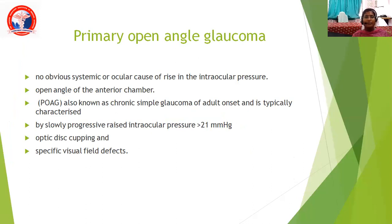Coming to primary open-angle glaucoma, what is primary? We don't have any specific causes. There is no obvious systemic or ocular cause of rise in the intraocular pressure. That is why we call it primary. There is an open angle of the anterior chamber. It is also known as chronic simple glaucoma of adult onset, characterized by slowly progressive raised intraocular pressure of more than 21 millimeters of mercury, optic disc cupping, and specific visual field defects.